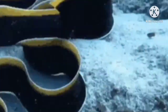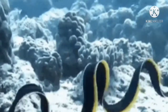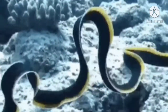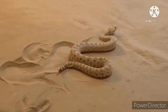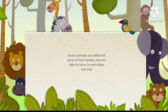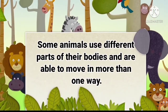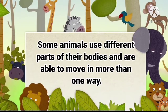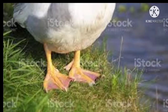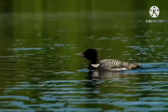There are also animals that use their whole body to either glide or slither. Examples are eels, snakes, and earthworms. There are also animals that use different parts of their bodies and are able to move in more than one way. For example, a duck uses its webbed feet to swim